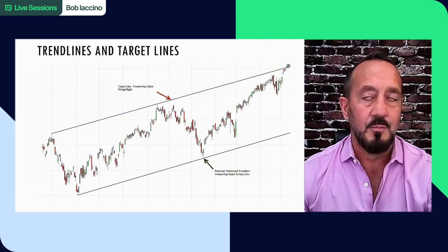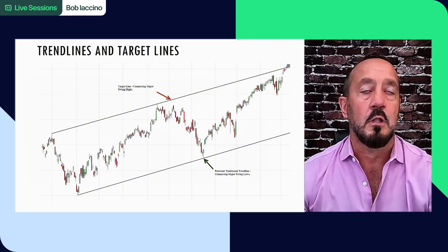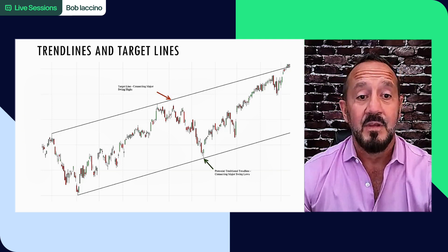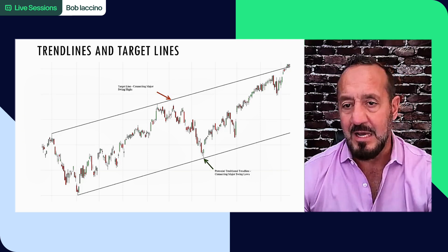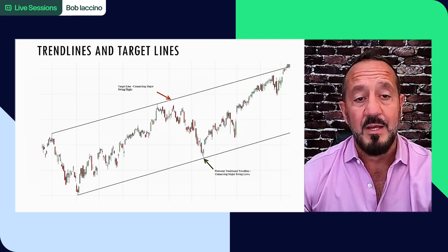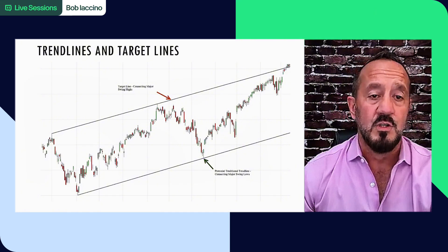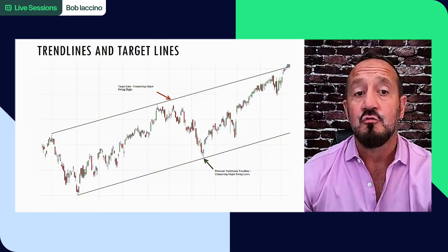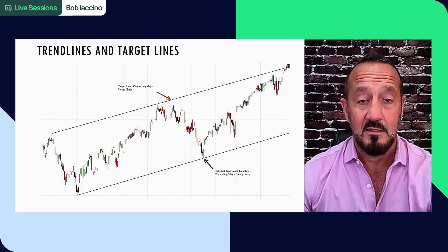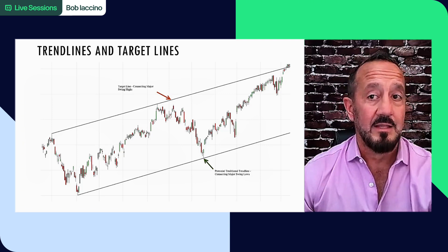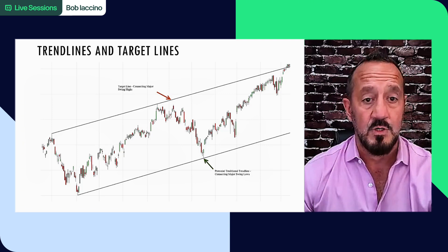This channel could be at the end of a longer, larger down move forming a flag, or it could just be a channel you're looking at. These can be horizontal as well. But you want to make sure you don't call those upward sloping trend lines that are connecting swing highs trend lines, because they're not. If you break that particular line, you're not reversing or changing trend. The trend stays the same - it's upward sloping.